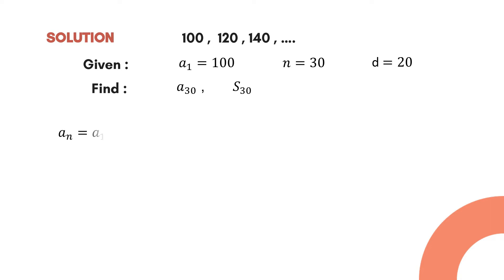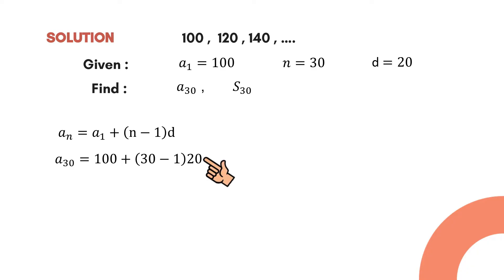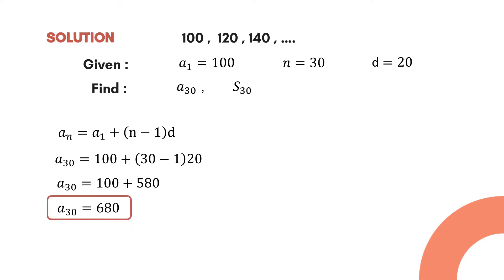Let's compute first for a₃₀ using the arithmetic sequence formula: aₙ = a₁ + (n − 1) × d. Substituting the values: a₃₀ = 100 + (30 − 1) × 20. That's 100 + 29 × 20 = 100 + 580. Therefore a₃₀ = 680.